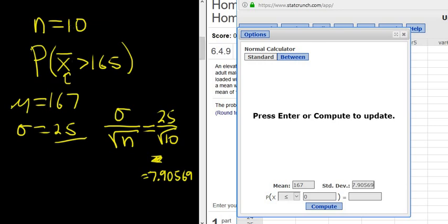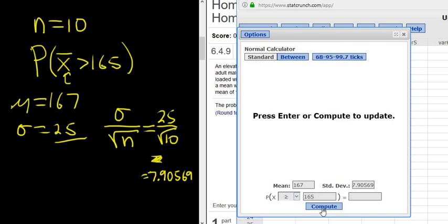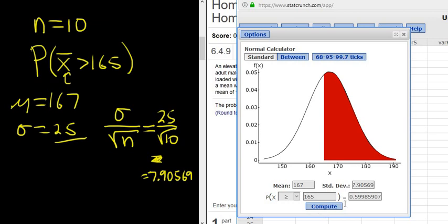So we're asked a question about a mean, right? The sample size is bigger than one, so that means we're usually going to have an x-bar, and that means that we have to do this process here. If it was just like one passenger, then none of this would be going on. We would just use the 25. Greater than or equal to 165. Click Compute.